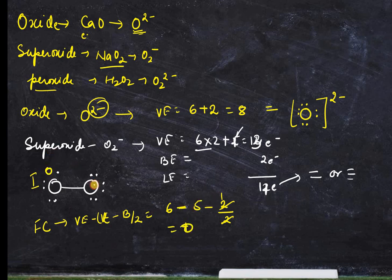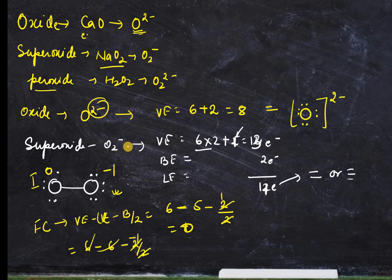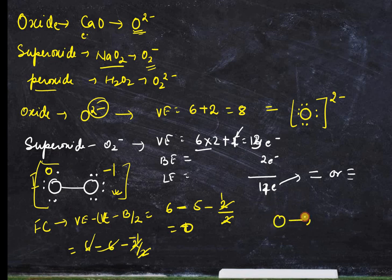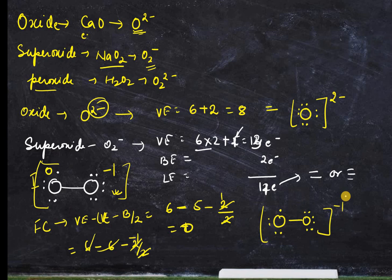Now for oxygen number 2: valence electrons = 6, lone pair = 6, bonding = 2 divided by 2 = 1, so 6 − 6 − 1 = minus 1. So the formal charge of minus 1 is coming from this second oxygen. This is the correct Lewis dot structure for superoxide — one unpaired electron on one oxygen and the overall charge written as minus 1. I hope this is clear for superoxide.